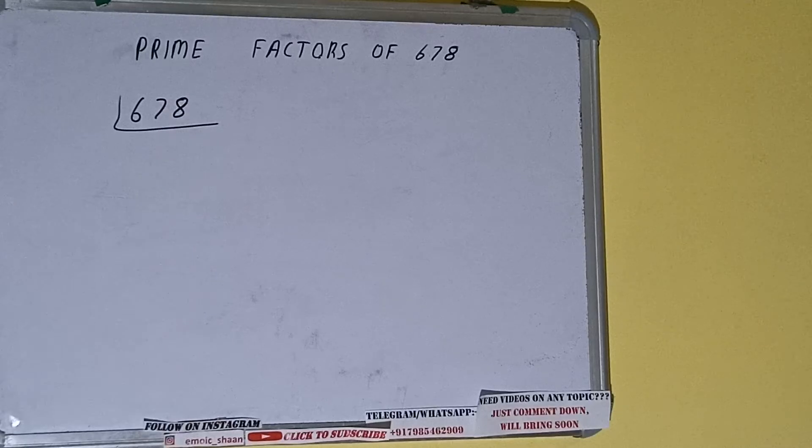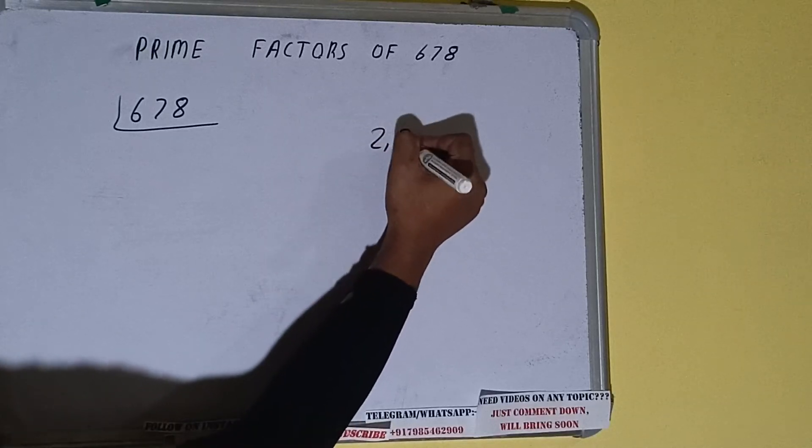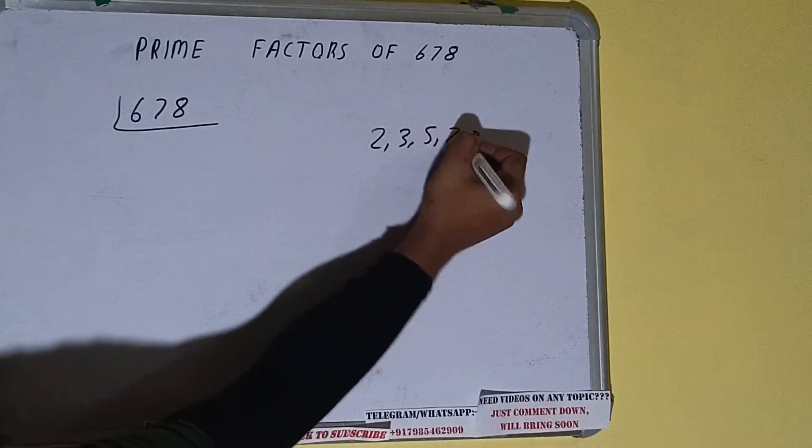The next thing we need to know about is what are prime numbers. Prime numbers are numbers that are divisible by 1 and the number itself, like 2, 3, 5, 7, and so on.